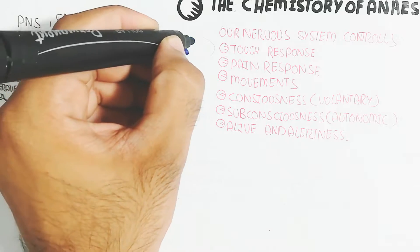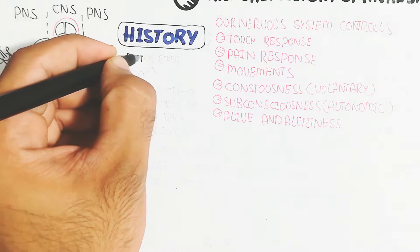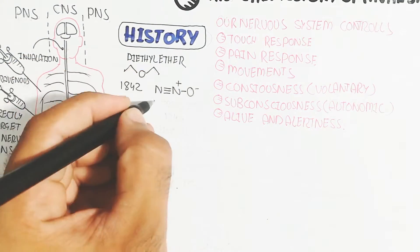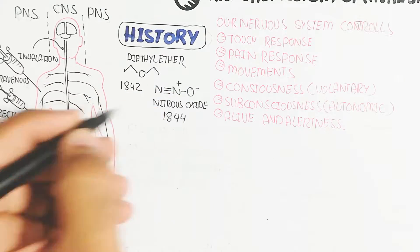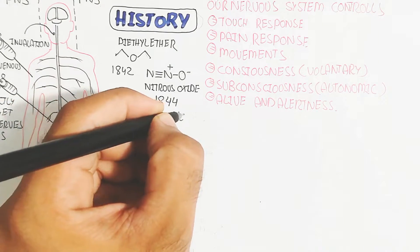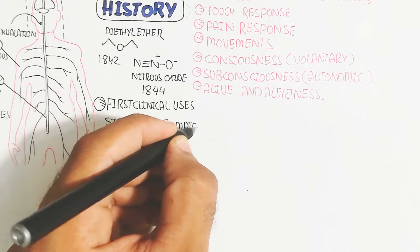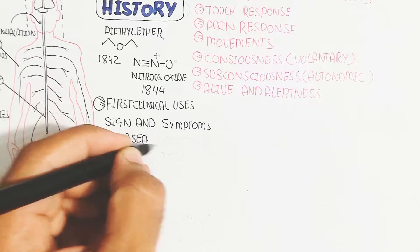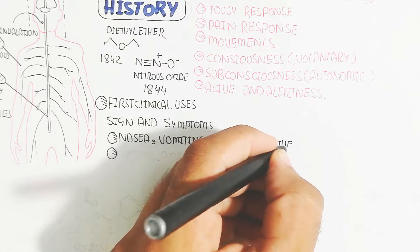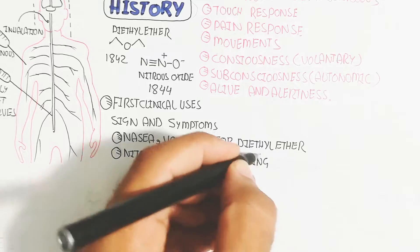Diethyl ether was used in 1842, and nitrous oxide was also used in 1844 — this was basically the first clinical use of anesthetics. The sign and symptom of diethyl ether anesthetic is nausea and vomiting, while nitrous oxide is still used today and is also known as the laughing gas.